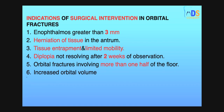What are the indications for surgical treatment of orbital fracture? When enophthalmos is greater than 3 mm; when there is herniation of tissue into the antrum; when there is tissue entrapment or limited mobility; if diplopia is not resolving after 2 weeks of observation; when orbital fractures involve more than half of the floor; and when there is an increase in orbital volume. All these are indications for surgical intervention of the orbital fracture.